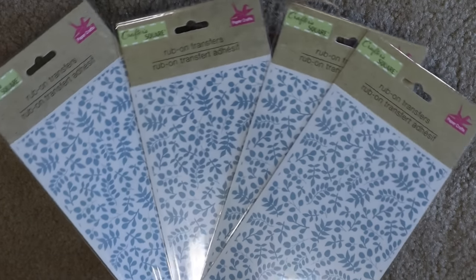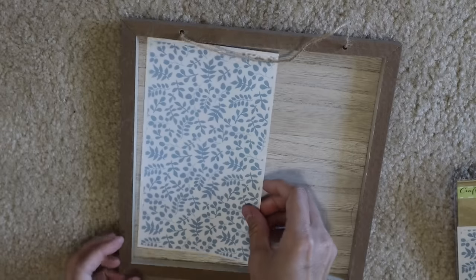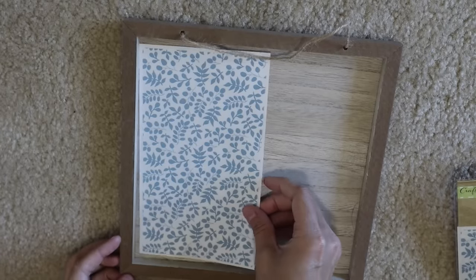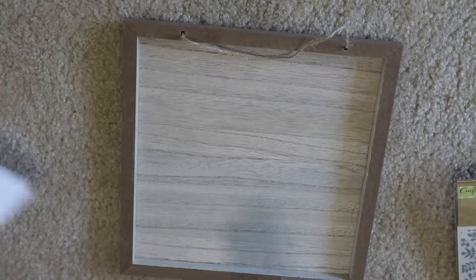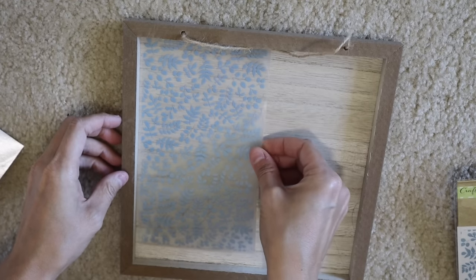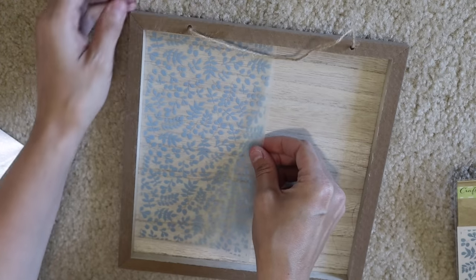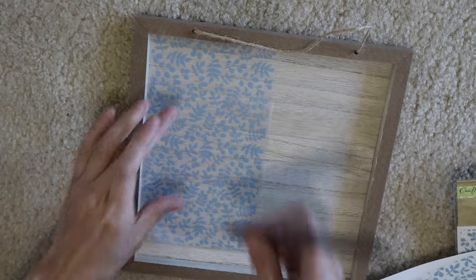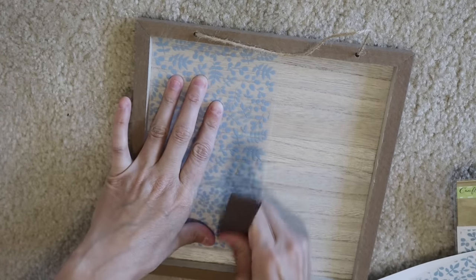One, I'll be using some rub-on transfers. I ended up using three of these, actually two full ones, and then I just trimmed off some pieces on the third one. And then you just save that, use it for later. Don't throw it away just because you use a tiny bit. And then I am just using a thick crafter stick.